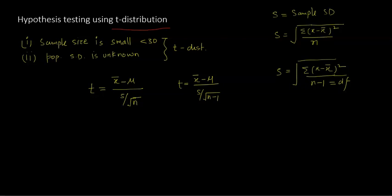If s is calculated using the formula with n minus 1 (degrees of freedom), I use the corresponding t-formula. If s is calculated using n in the denominator, I use the other t-formula. If it is not specified in the question, I would always recommend using the n minus 1 formula. That is the difference between dividing by square root n and square root of n minus 1.